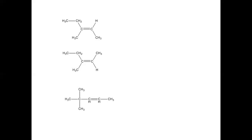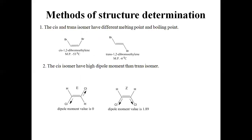There are several methods for the structure determination of a geometrical isomer — to determine whether it is a cis/Z isomer or a trans/E isomer.